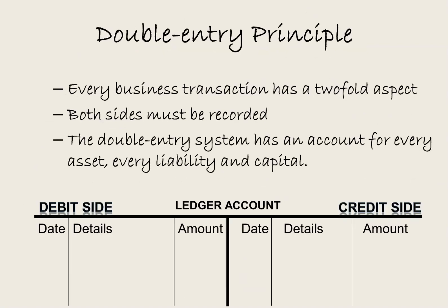Every business transaction has a two-fold aspect and both sides must be recorded. The double entry system has an account for every asset, every liability and for capital. These are recorded in ledger accounts.